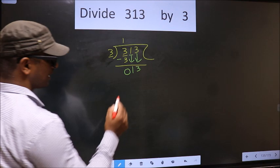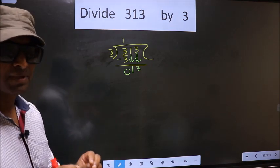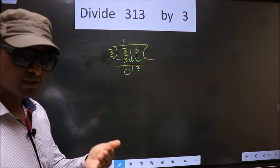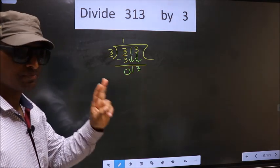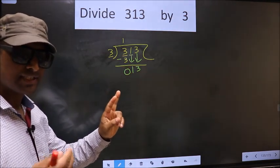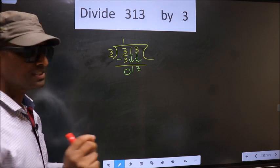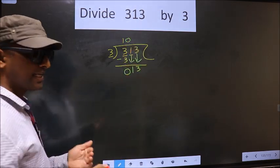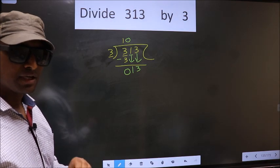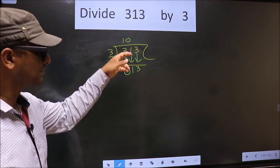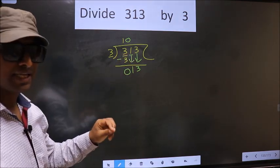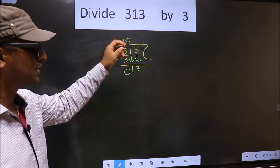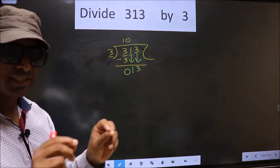But here, you should remember this point. Whenever you are bringing down 2 numbers at the same time, compulsory you should put 0 in the quotient. I repeat: whenever you are bringing down 2 numbers at the same time, compulsory put 0 in the quotient. Remember this point.